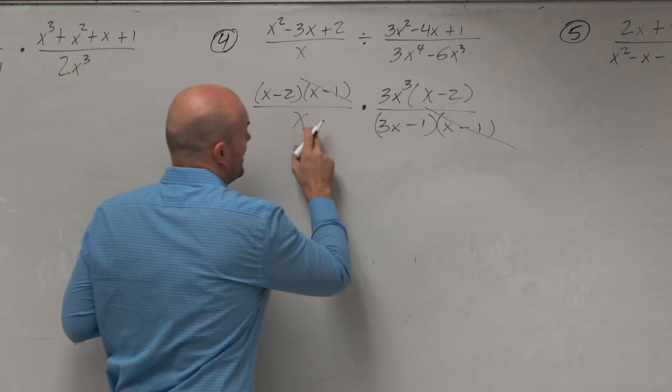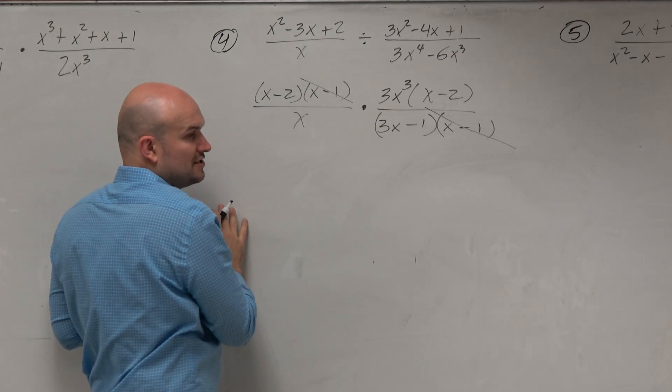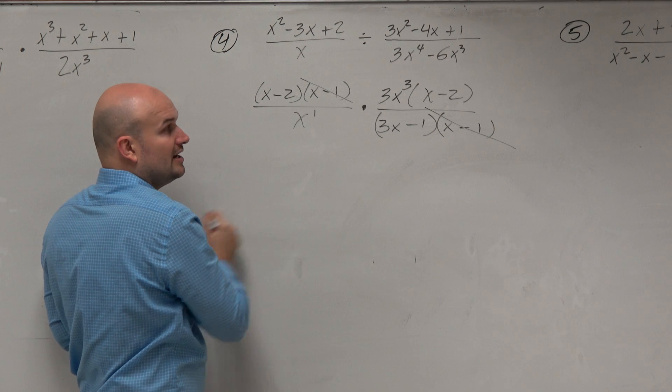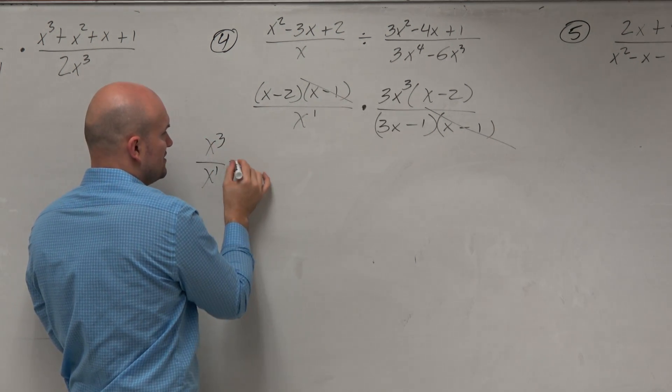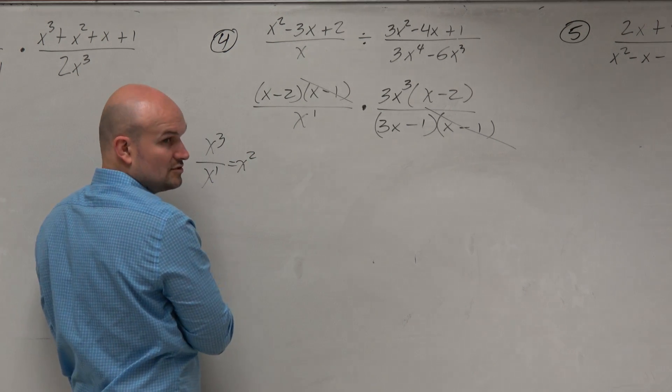Now, notice here, I have an x in the denominator and x to the third. So again, we could use the rules of exponents, right? If I had x cubed over x to the first, that's just an x squared, right?